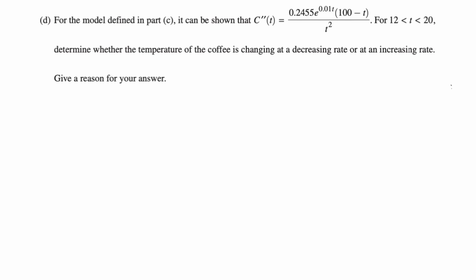Okay. So part D says for the model defined in part C, it can be shown that C''(t) is this thing. They're giving this to you because not every calculator can find a derivative. So they want it to be fair.